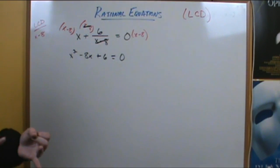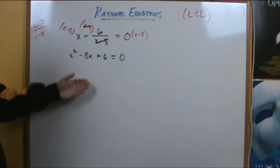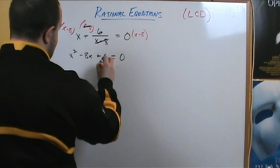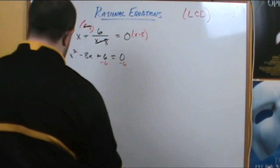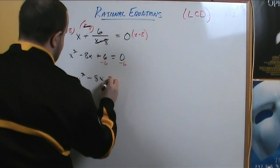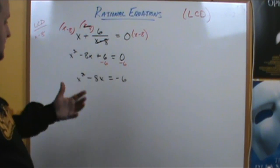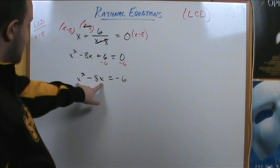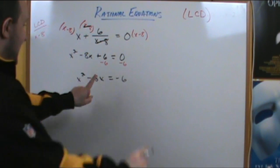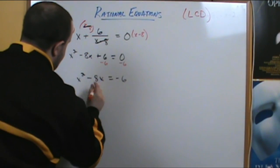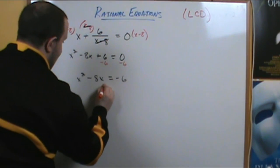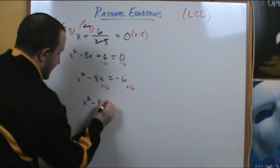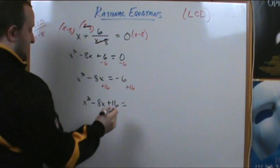We can use completing the square or the quadratic formula. I'm going to use completing the square. First, we get the 6 to the other side by subtracting 6 from both sides, leaving us with x squared minus 8x equals negative 6. To complete the square, we need to create a perfect square trinomial on the left side. We take half of negative 8 and square it: negative 8 divided by 2 is negative 4, squared is 16. So we add 16 to both sides, giving us x squared minus 8x plus 16 equals 10.